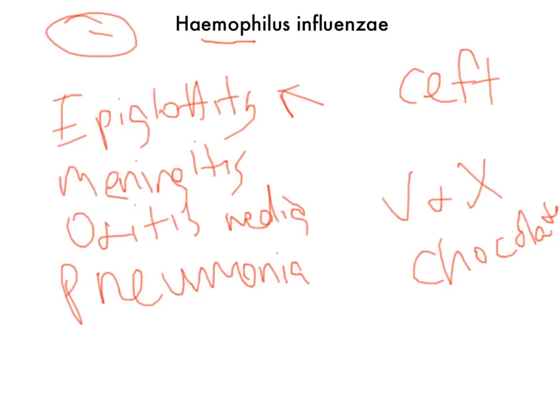There is also a vaccine against Haemophilus influenzae, and it contains Haemophilus influenzae type B, which is actually the most invasive type.